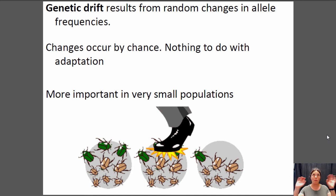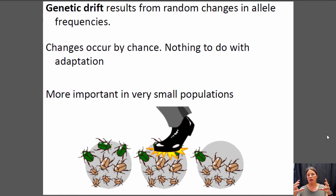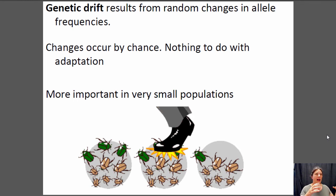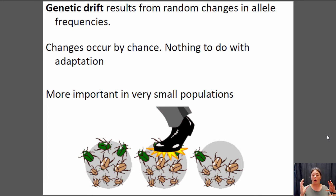Now imagine you had 1,000 beetles with the same frequencies — 66% brown and 33% green. The guy walks by and steps on two green beetles. Now you have 666 brown beetles and 331 green beetles. That really doesn't affect the allele frequencies very much — it has a very small effect. So dumb luck has a smaller effect on large populations than it does on small populations.